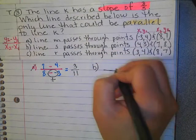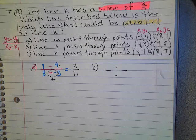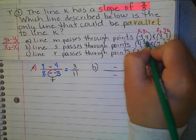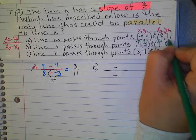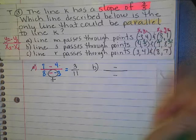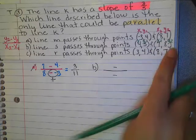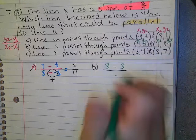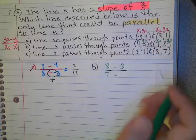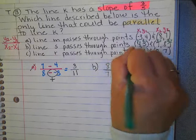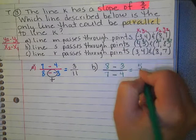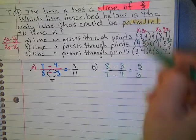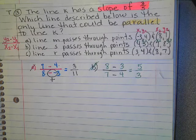Again, do your little fraction bar with your subtraction signs and use a different color. This will be your x1, y1. This is x2, y2. So you put your y2 first, which is 8, minus your y1, which is 3. Then x2 is 7, and then x1 is 4. 8 minus 3, that's 5. 7 minus 4, that's 3. Nope, I want the 3 on top. So it's not B.